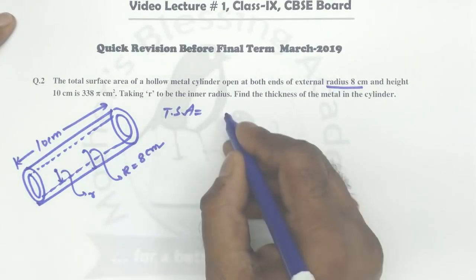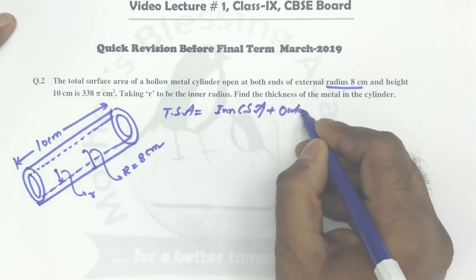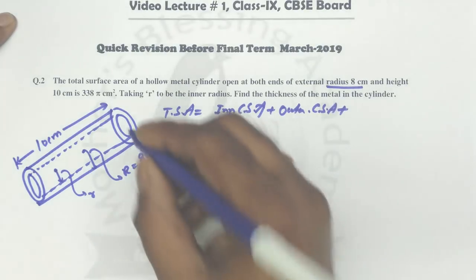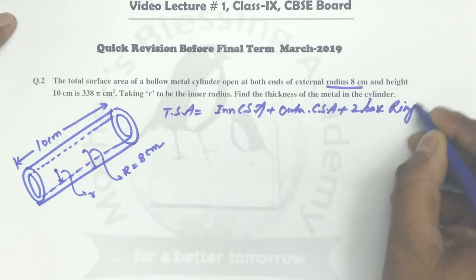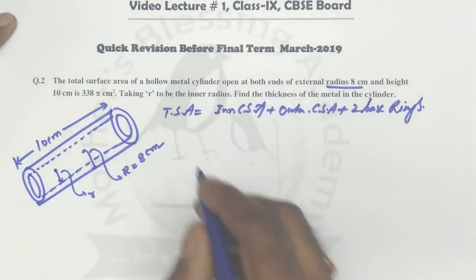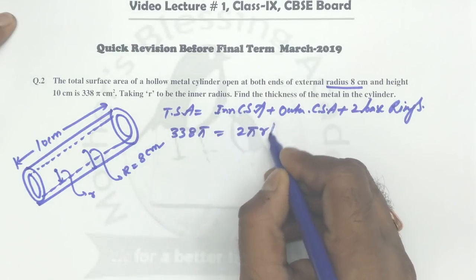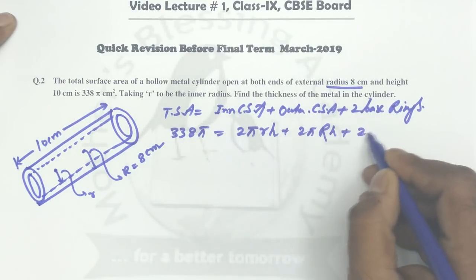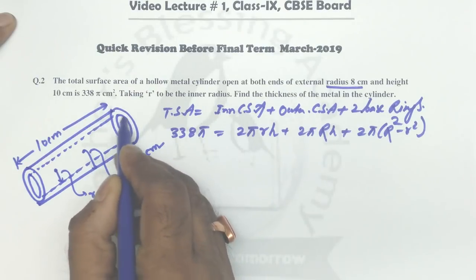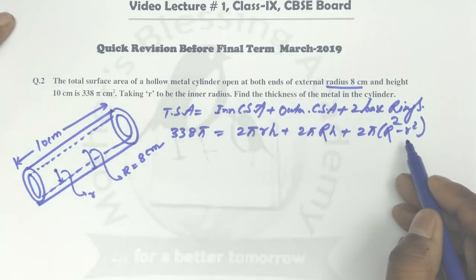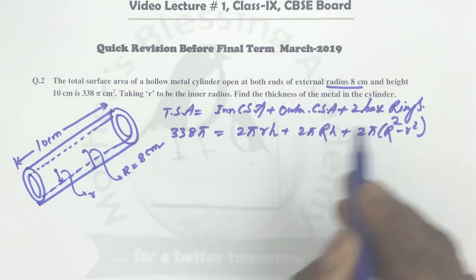The total surface area includes the inner curved surface area, the outer curved surface area, and two base rings. The inner curved surface area is 2πrh, the outer is 2πRh, and the two base rings give 2π(R² minus r²), because the ring area equals the outer circular area minus the inner circular area, and there are two such rings.